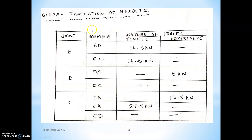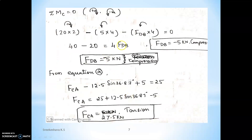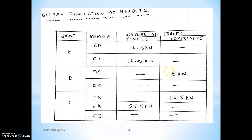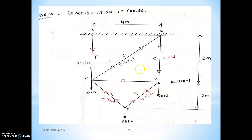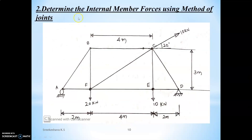Substitute FDB and FCB into equation 1 to get FCA. Now check whether the answer obtained matches what we got in method of joints — I have written the nature of forces from method of joints on the same slide. Check: FDB is minus 5, compressive — same here. Similarly, FCE is 27, tensile — same here, 27 tensile. So whatever the method — method of joints or method of sections — you have to get the same answers.